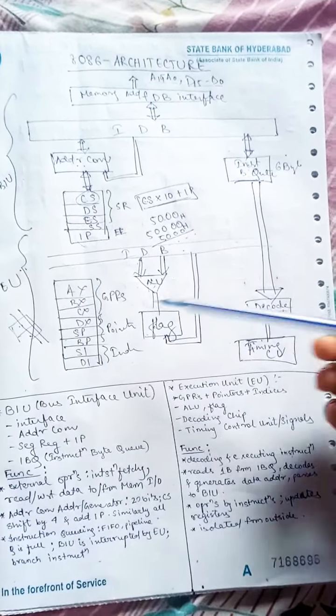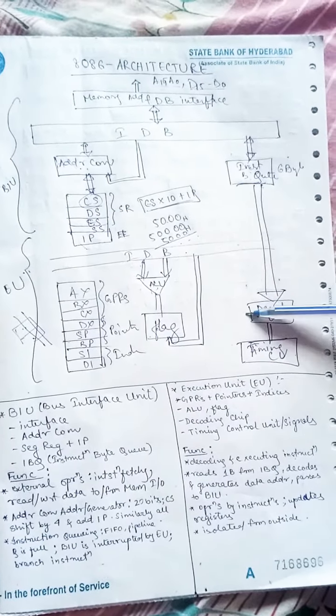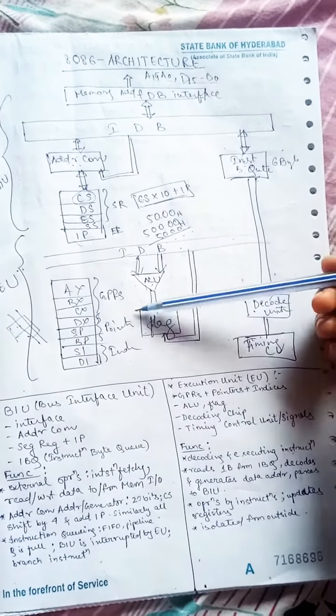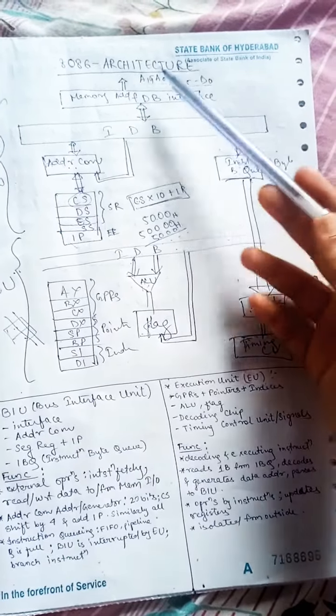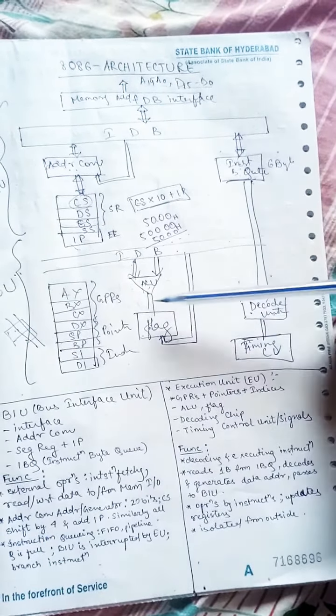So for decoding and executing the instructions, it will read one byte instruction from the instruction byte queue. It will decode and generate address if needed, whatever address is required it will fetch, and then it will start the operation.